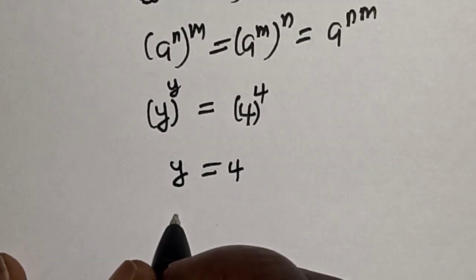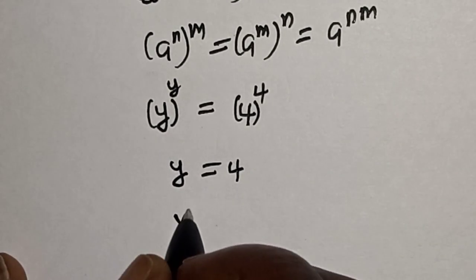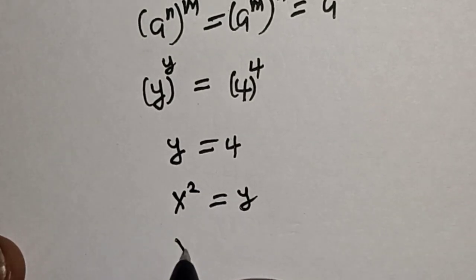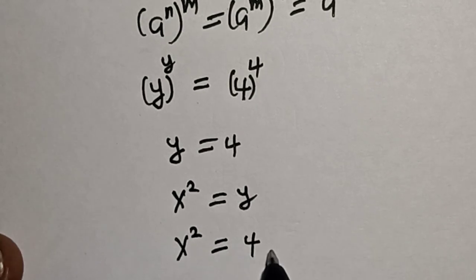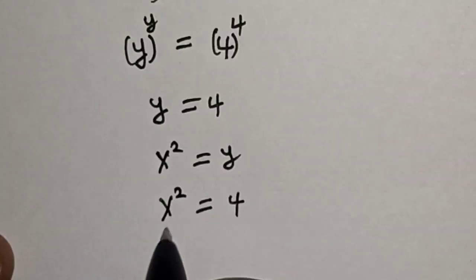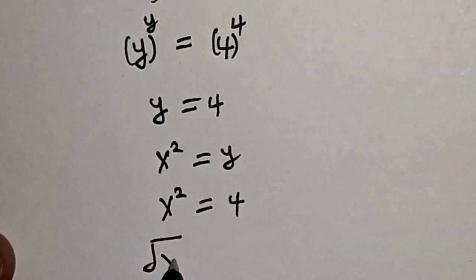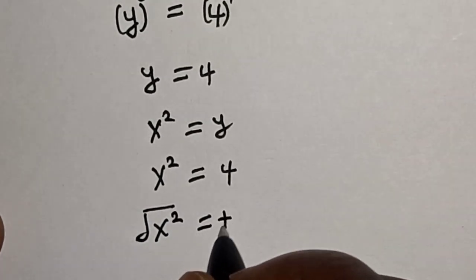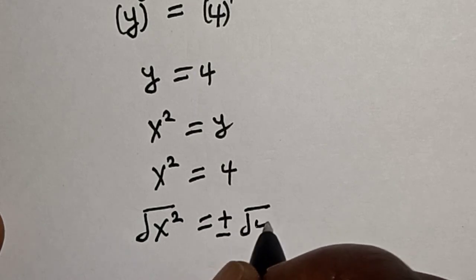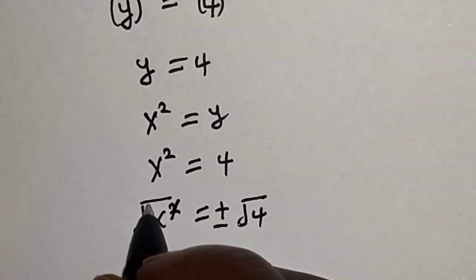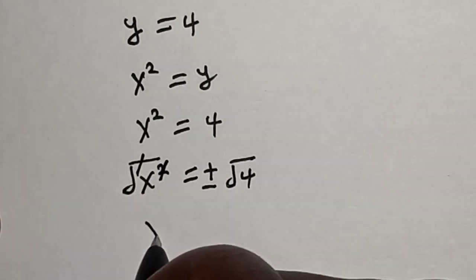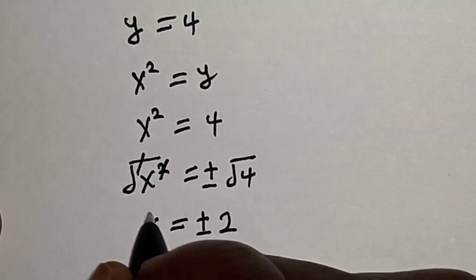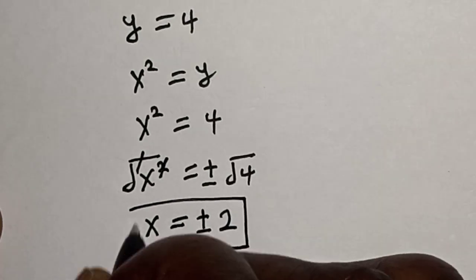But remember that s squared is equal to y. Now s squared is equal to 4. Let's take the square root of both sides: square root of s squared is equal to plus or minus square root of 4. This will cancel out, and s is equal to plus or minus 2. That is our final answer.